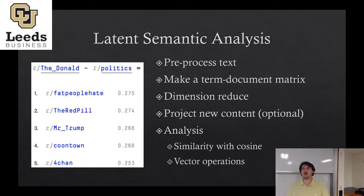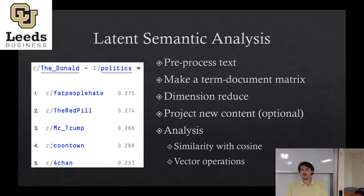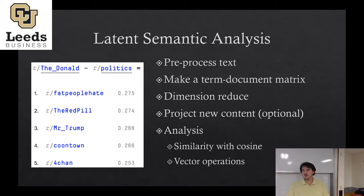What it was most similar to then was r/fatpeoplehate — posting pictures of fat people, insulting them, posting their home addresses and phone numbers. The internet is terrible. It has since been shut down. So what are the people on this pro-Trump site most like when you ignore their political affiliations? Trying to get fat people to harm themselves. The numbers shown are cosine similarities that have been normalized and sorted. Their justification for some of the math choices is a little sketchy, but it's needed to aid interpretability.